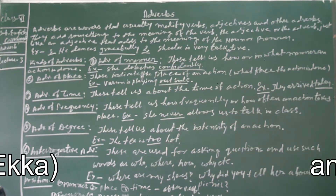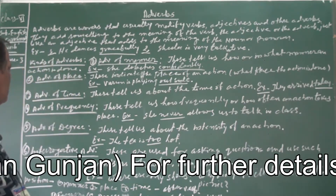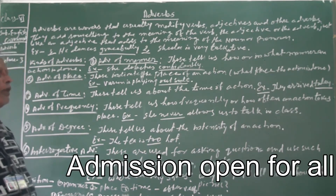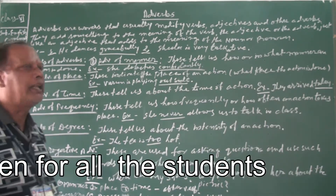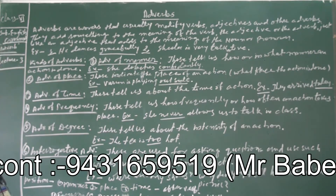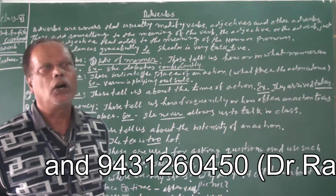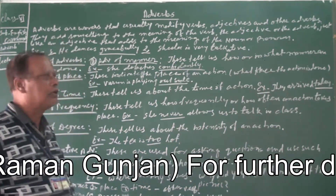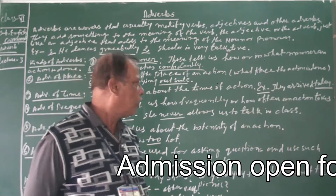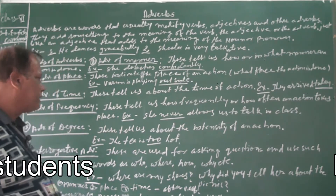Number five: adverb of degree. These tell us about the intensity of an action or quality. For example: 'The tea is too hot.' The word 'too' shows us the intensity — how hot the tea is. So 'too' is an adverb of degree.